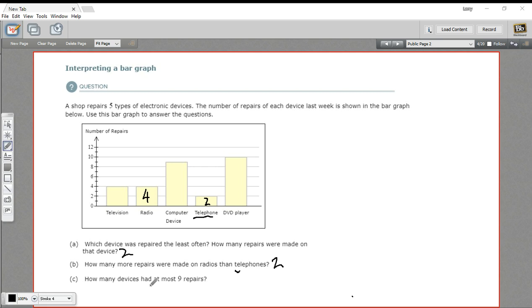And then it says, how many devices had at most nine repairs? Now this might be a little tricky. What does at most mean? It means it could have nine repairs or less, or fewer. So anything that's nine or below. So let's find that.